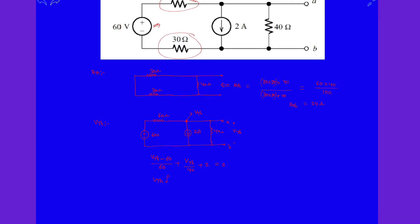Clearly V_th multiplied with 1 over 60 plus 1 over 40 equals minus 2. Clearly V_th is equal to minus 24 volts.